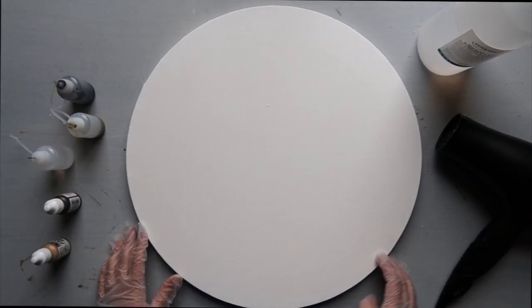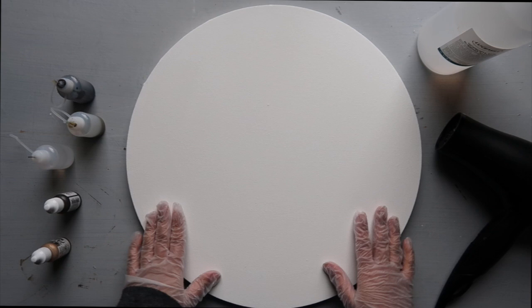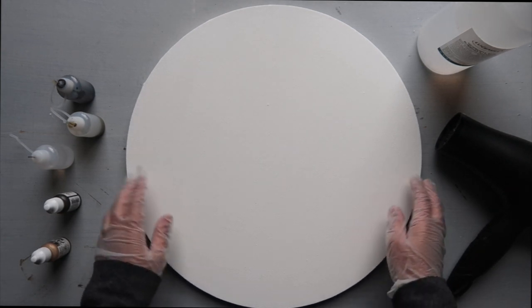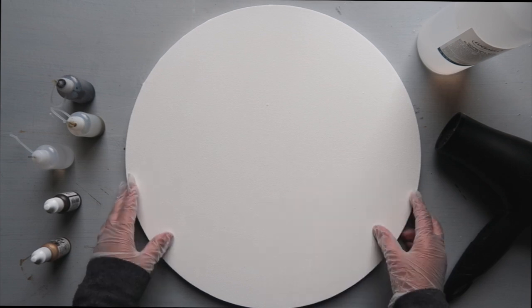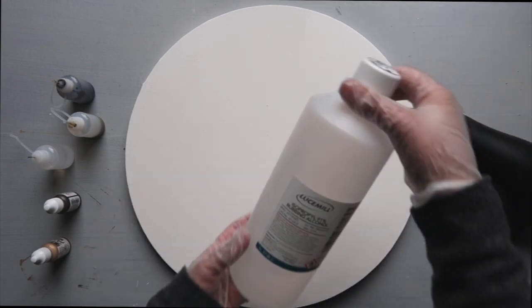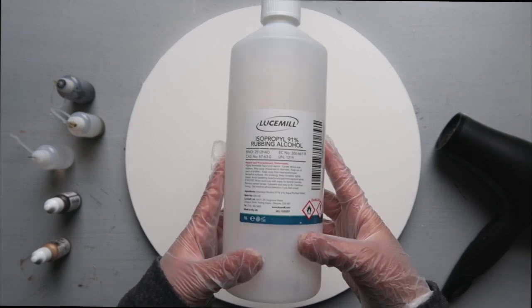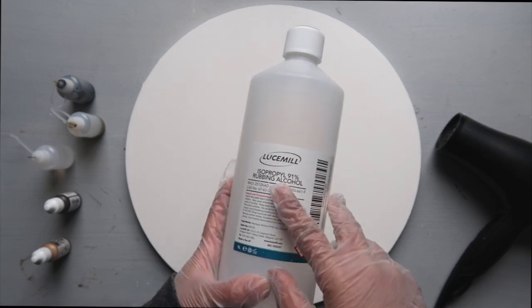So to begin, I've already primed my canvas using white acrylic gesso. I used two layers of white acrylic gesso and this means my canvas is completely waterproof. Now for the rubbing alcohol, I'll be using 91% isopropyl alcohol. You can get this on Amazon.